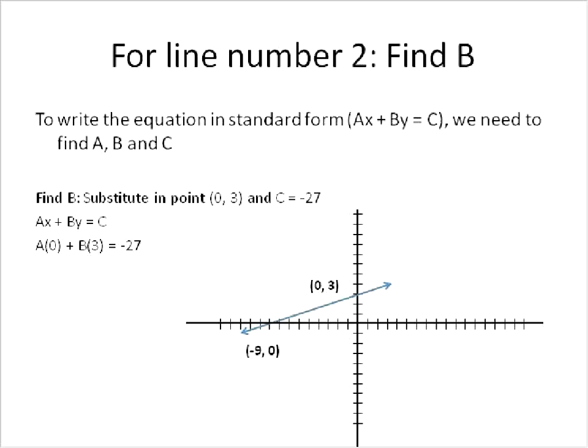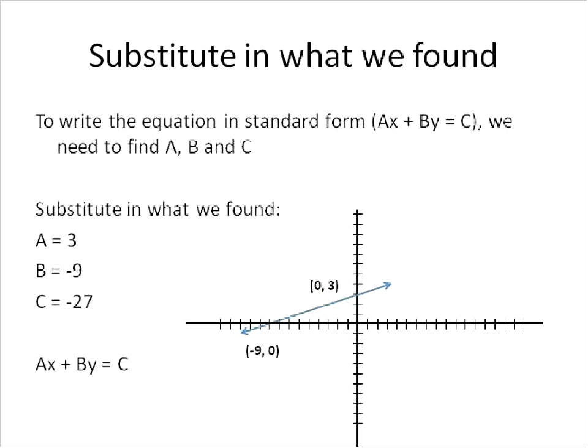We substitute in this information. A times 0 is 0, so we can remove the 0A. B times 3 is 3B, and negative 27 will stay the same. We divide both sides by 3. 3B divided by 3 is just equal to B, and negative 27 divided by 3 will give us negative 9. So now we have the solution. We have the value for B.